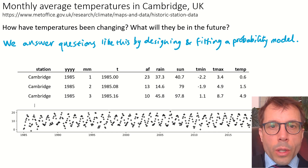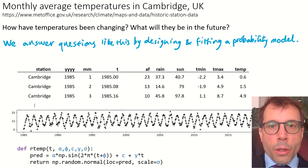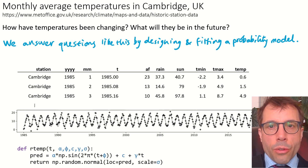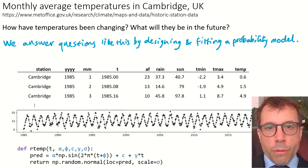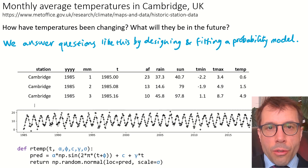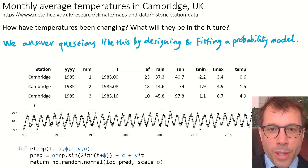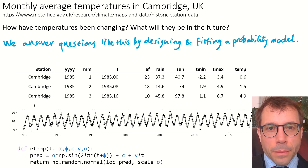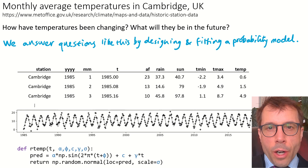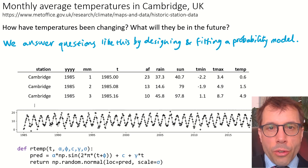In the first two videos we looked at a probability model for this data set. This function takes in the timestamp T and computes a sinusoid with amplitude alpha and phase shift phi. C controls the level, and gamma is a linear slope term which allows the model to express that temperature might be increasing or decreasing. There's also a noise term — a normal random variable with standard deviation sigma — to describe the noise we see in the data.